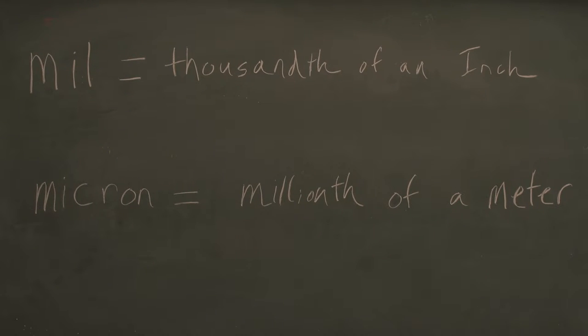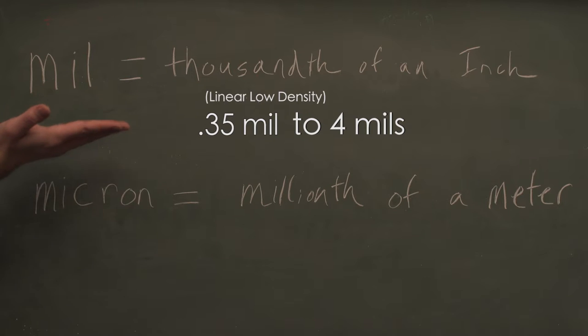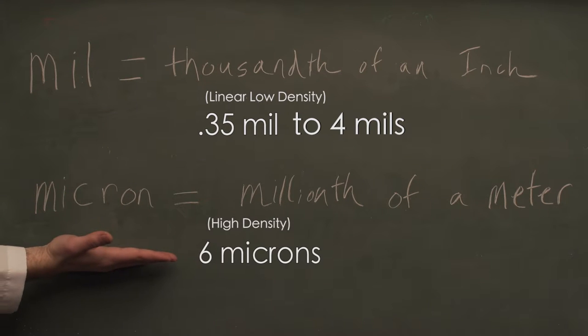Linear low density liners are measured in units called mils, while high density liners are measured in microns. Linear low density liners have a gauge between 35 hundredths of a mil for small bags, and 4 mils for the large ones. High density liners range from 6 microns for the smaller bags, and 24 for the larger ones.